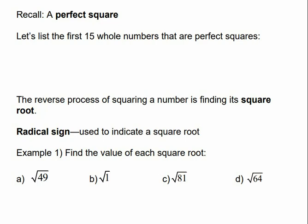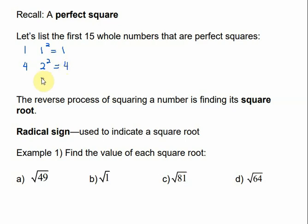So let's just list the first 15 whole numbers that are perfect squares. 1 is a perfect square because 1 times 1 equals 1. 4 is a perfect square because 2 times 2 is 4. 9 is a perfect square because 3 times 3 is 9.